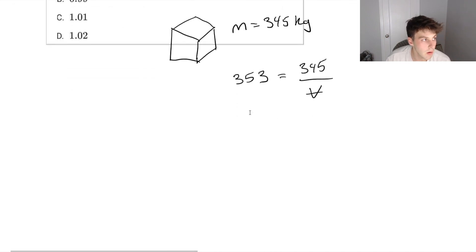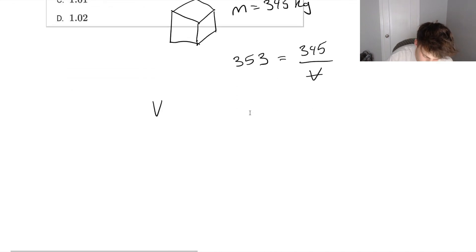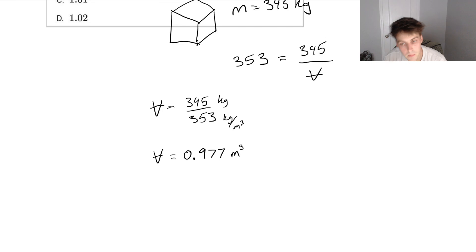So we can just solve for our volume. So our volume is going to be 345 divided by 353. And 345, reminder, this is kilograms. Our denominator is in kilograms per meters cubed. We can verify that the units should be meters cubed. Doing this math, we end up with 0.977 meters cubed.